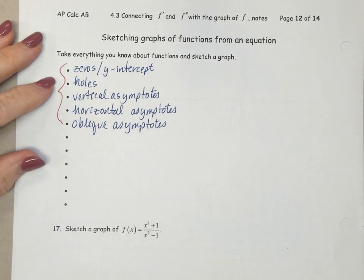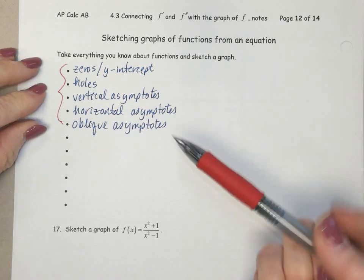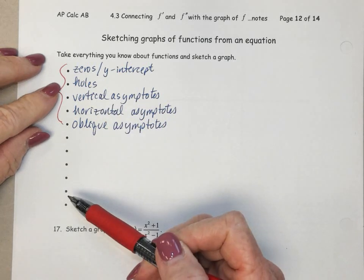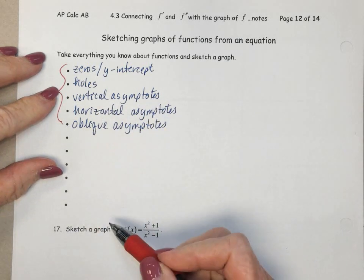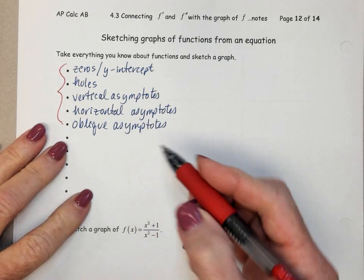But we are basically taking everything we know about functions and we're going to sketch a graph. All of your pre-calculus stuff, so zeros, y-intercept, holes, vertical asymptotes, horizontal asymptotes, oblique asymptotes.